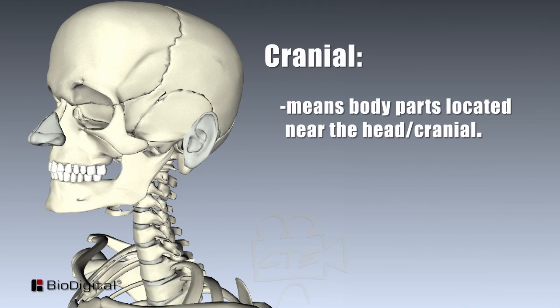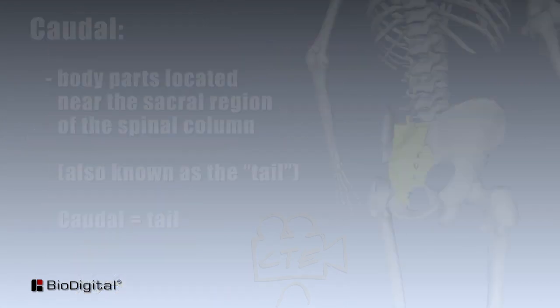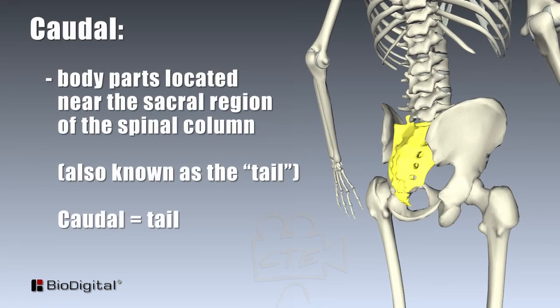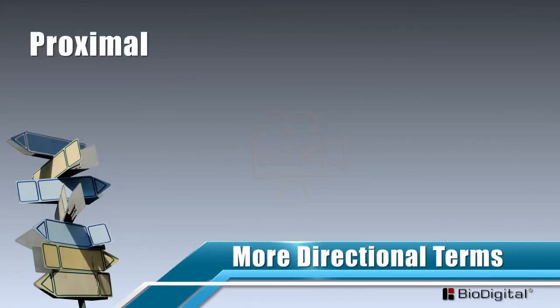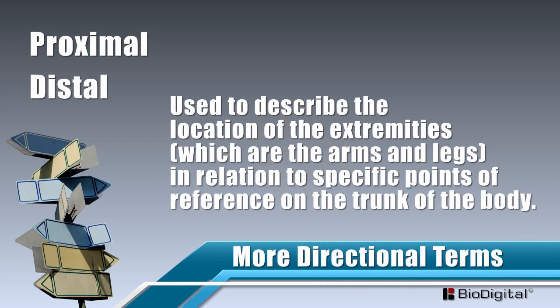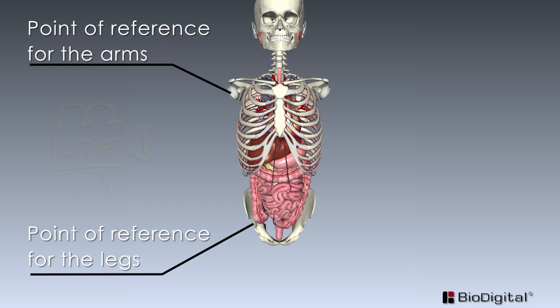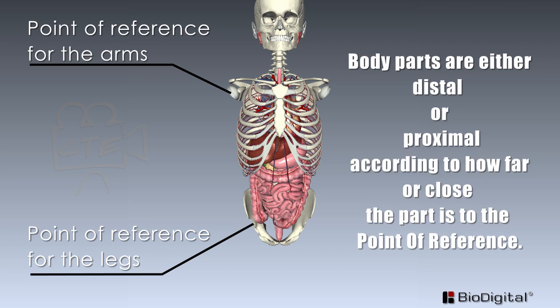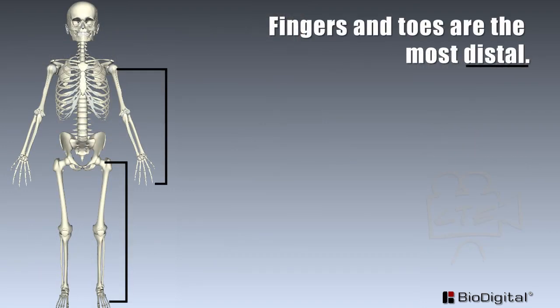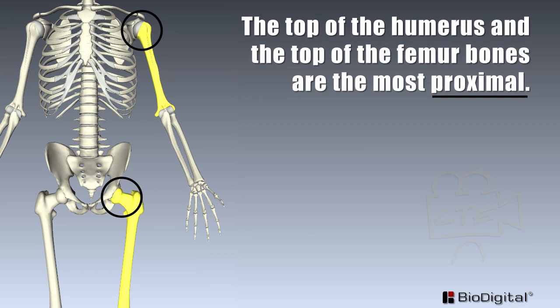Cranial means body parts located near the head, and caudal designates body parts located near the sacral region of the spinal column, also known as the tail. Other directional terms are proximal and distal. These are used to describe the location of the extremities — the arms and legs — in relation to specific points of reference on the trunk of the body. These points of reference are located at the shoulders and the hips. Fingers and toes are the most distal, whereas the top of the humerus and femur bones are closest to the point of reference and are the most proximal.